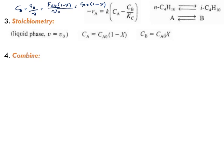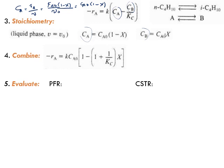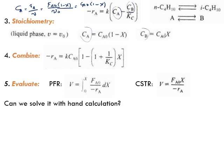Let's go to combine then. After combine comes evaluation. If we combine, we get this equation for the rate law. Basically, we substitute for CA and CB using these equations. Then we can evaluate the equations. Plug flow reactor, this is the design equation. CSTR, this is the design equation. Can we solve it with hand calculation?